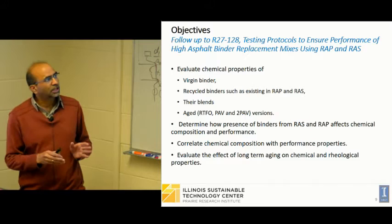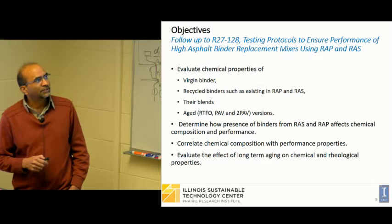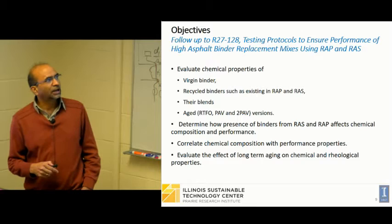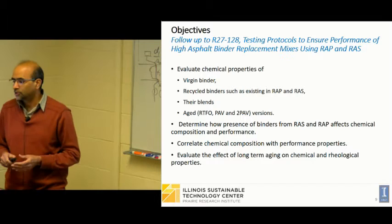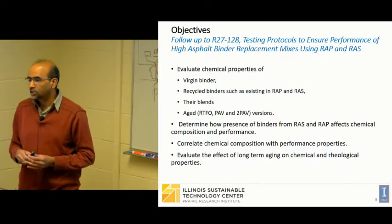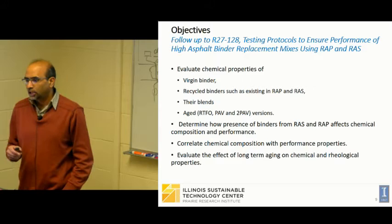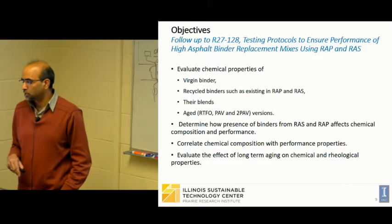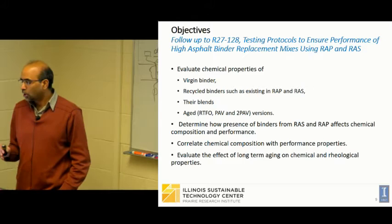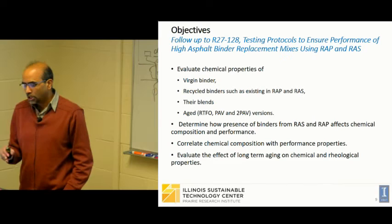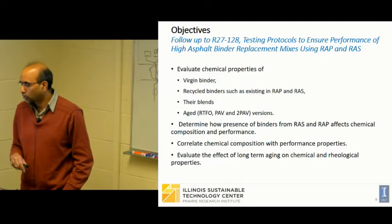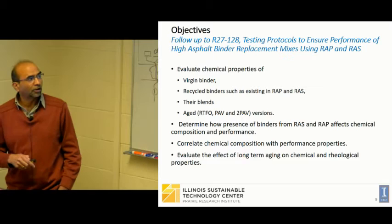Coming back to the project: this was an outgrowth of R27128, which was testing protocols to ensure performance of high asphalt binder replacement mixes using RAP and RAS. Our main objectives were to evaluate the chemical properties of virgin binders, then look at the recycled binders in RAP and RAS and their blends, examine the chemical properties of aged versions (RTFO, PAV), find out how these binders affect composition and performance, correlate chemical composition with performance properties, and study the effect of aging on chemical and rheological properties.